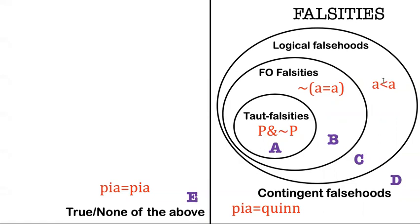Now again, sometimes you might have one of these symbols, and the sentence isn't even false. Just because there's the identity symbol doesn't mean the sentence is false. Pia equals Quinn, you know, I'm assuming, in fact, these are two different people. So this sentence is false, but that's just a contingent falsity. Or Pia equals Pia, that sentence is true. So it's none of those things.